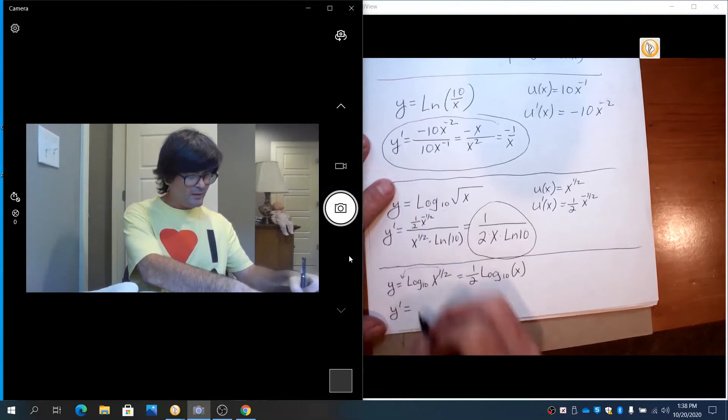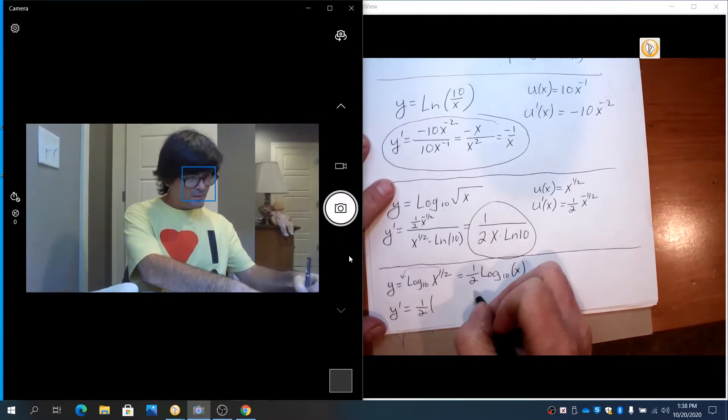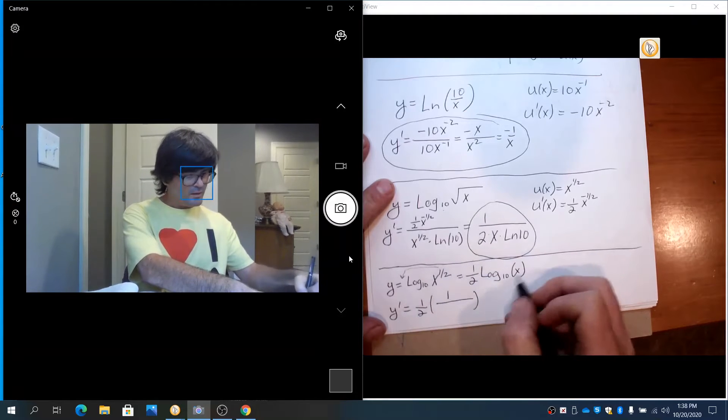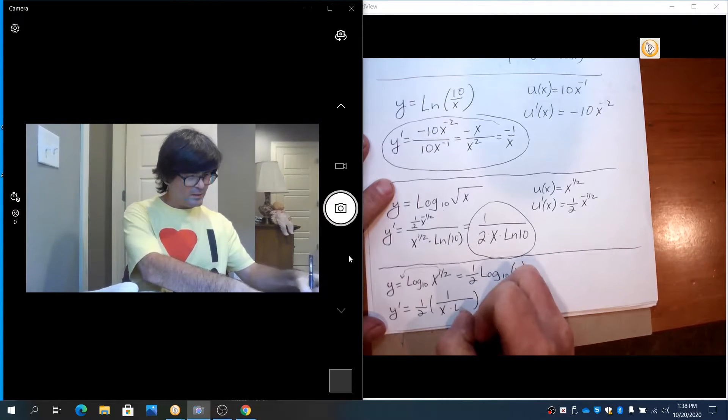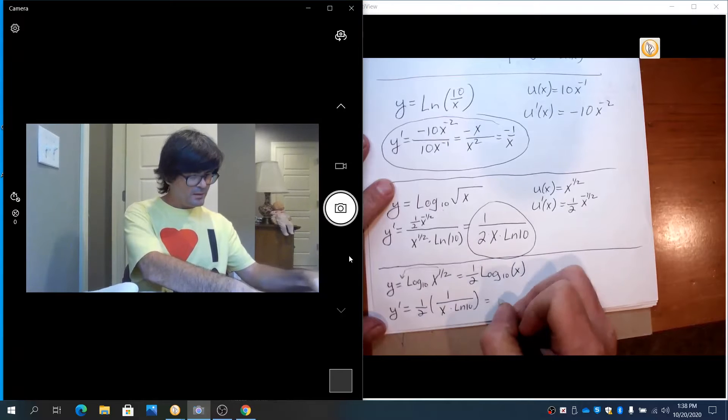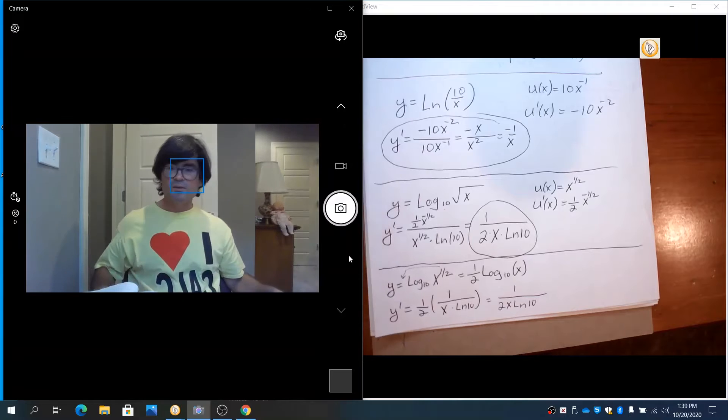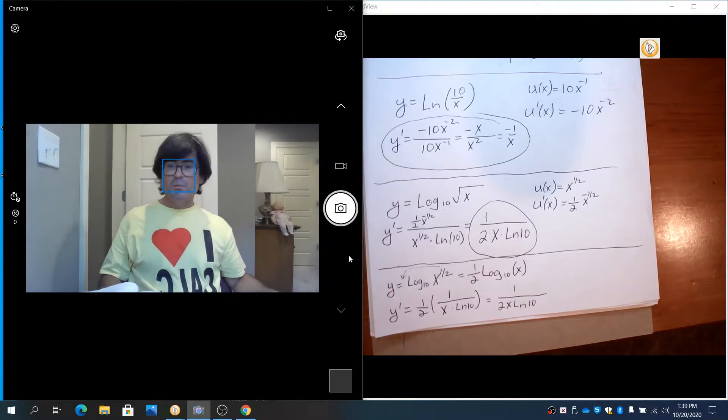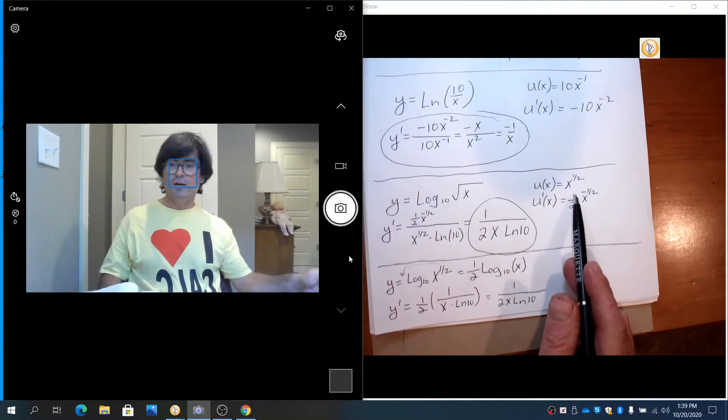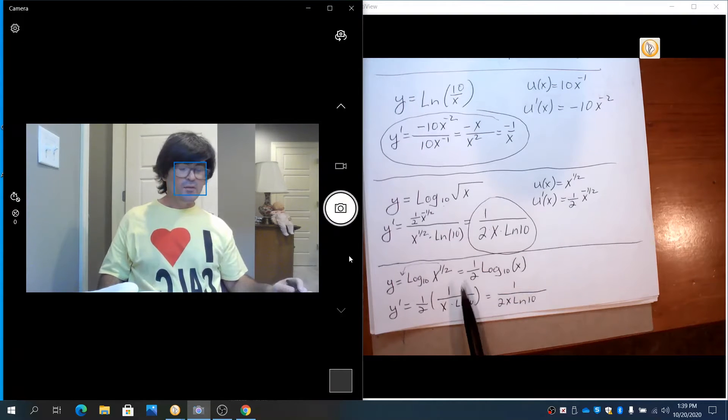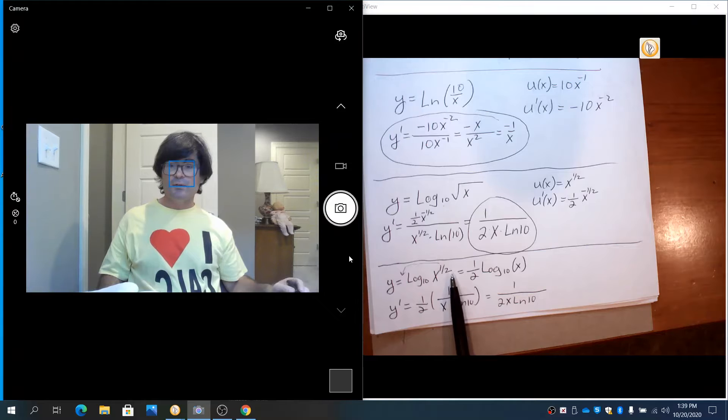So when you look at your derivative, you're going to have 1 half as a coefficient, and then the derivative of x is 1, the original is x, and then natural log 10 on bottom gives you the same result. Now in this particular problem it wasn't really that much harder to do it the original way, u and u prime. But there will be some cases where if you can recognize a logarithmic property that you can simplify first, it will make your problem vastly easier.